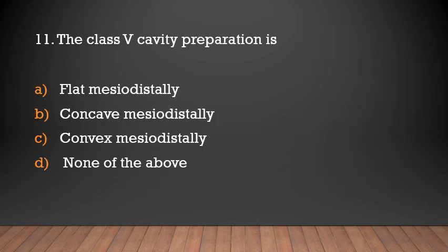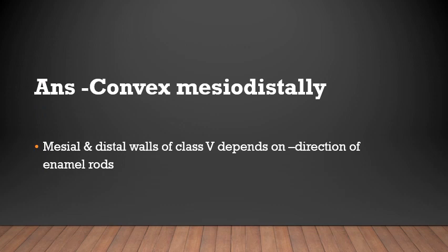The classified cavity preparation is convex mesiodistally. The mesial and distal walls of the classified cavity depend on the direction of the enamel rods.